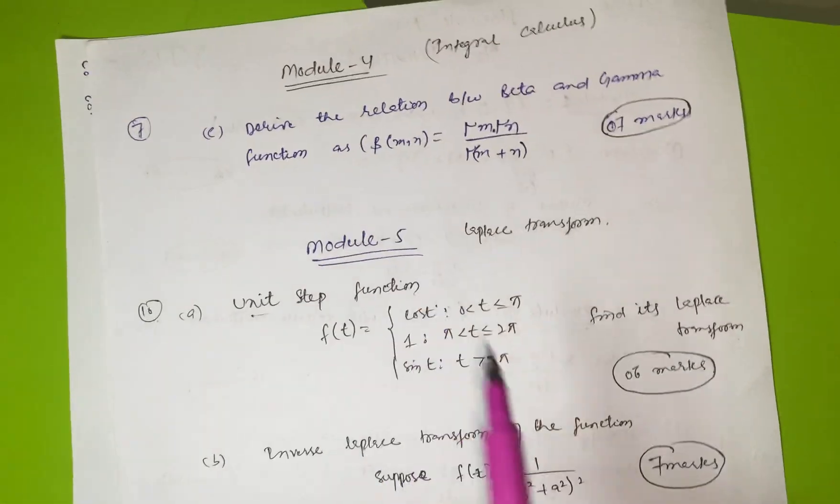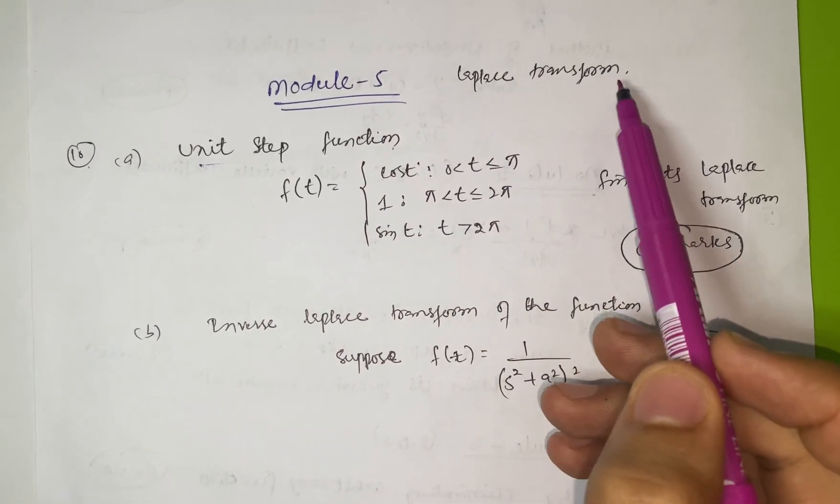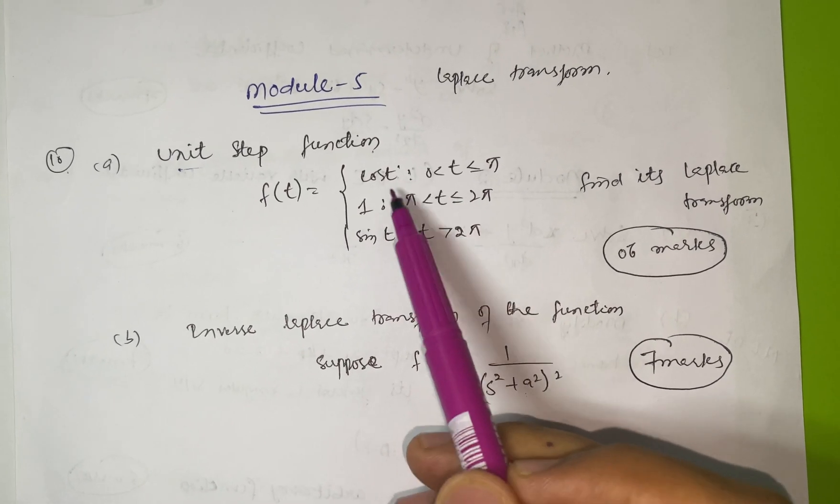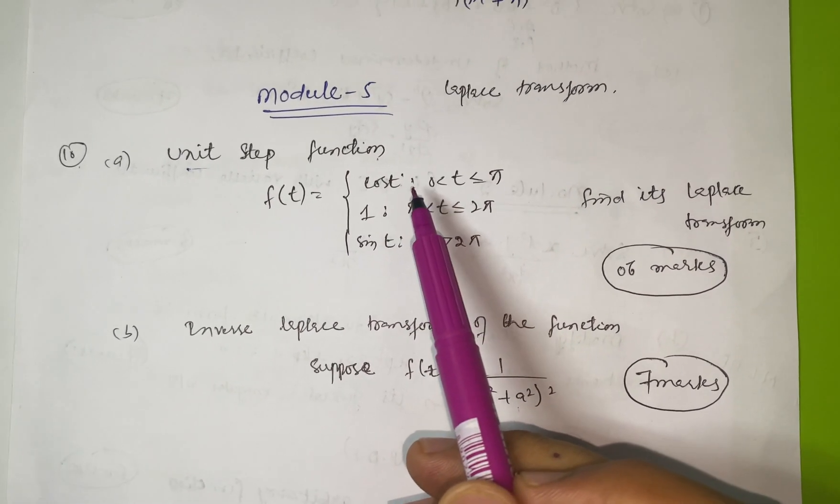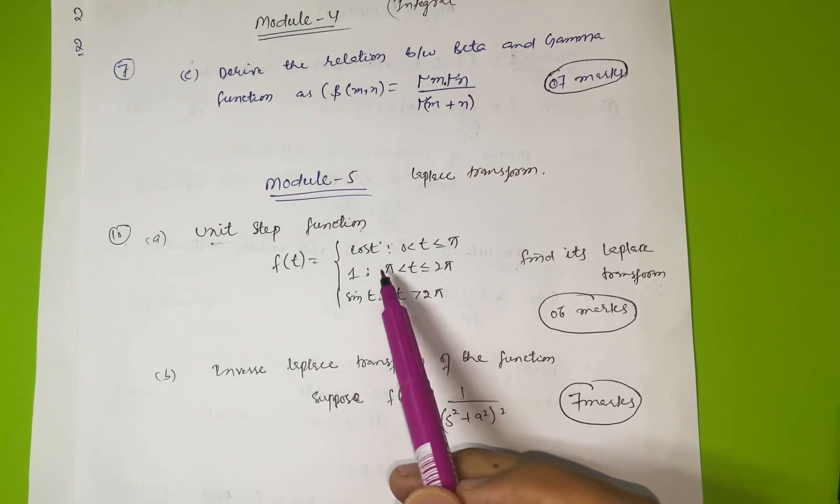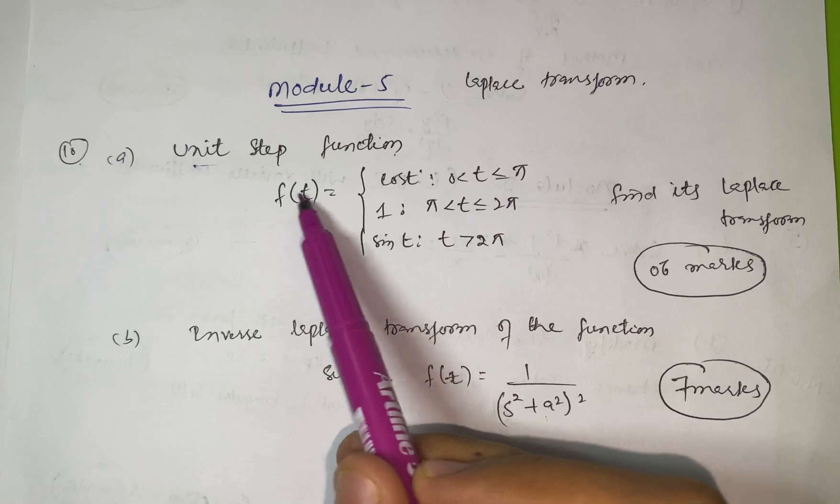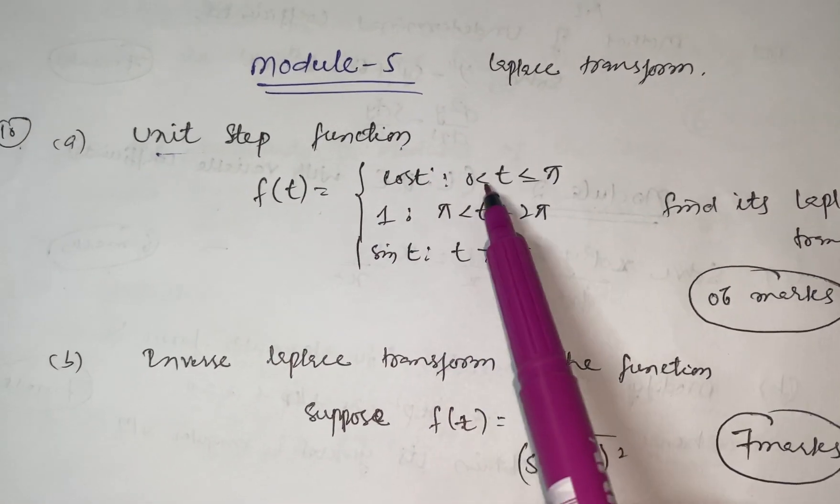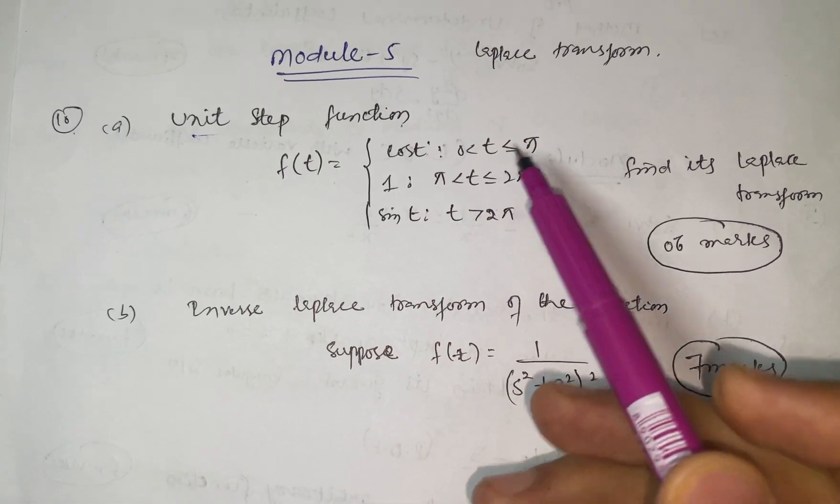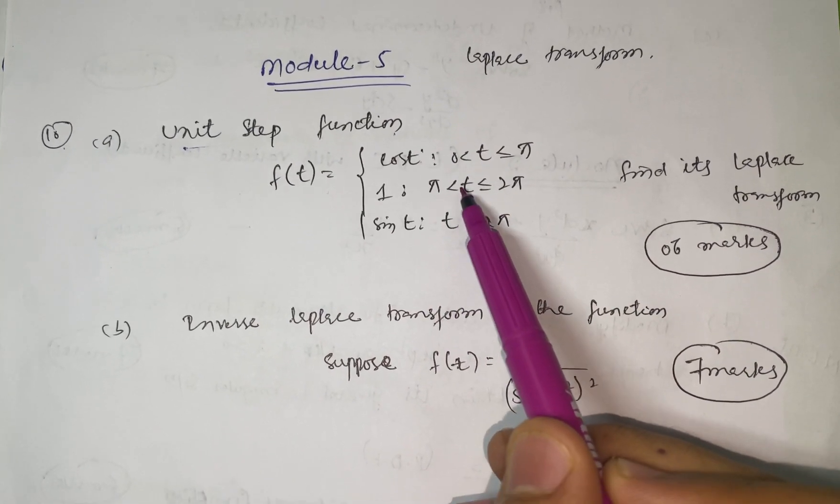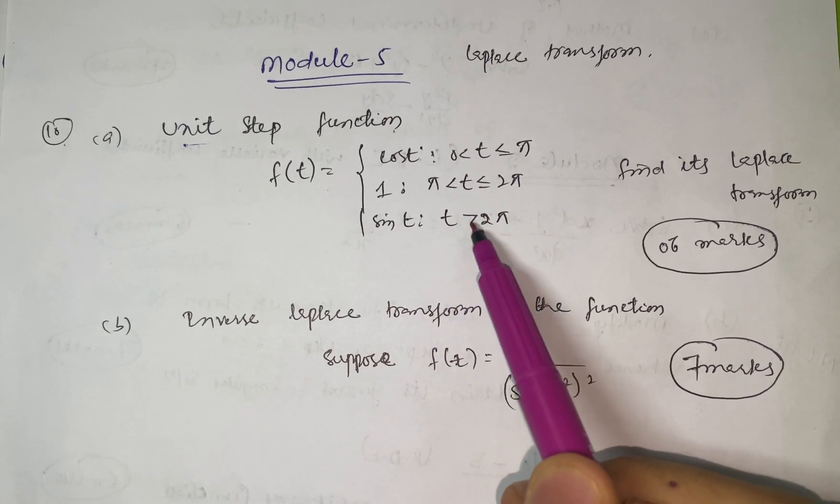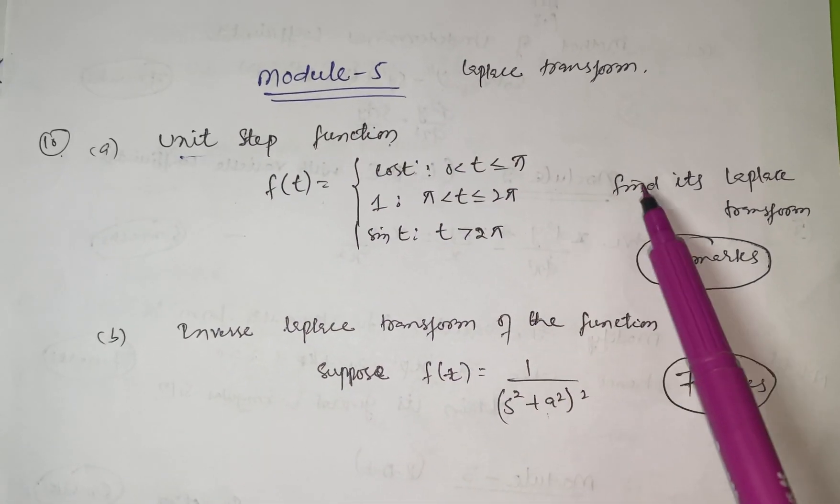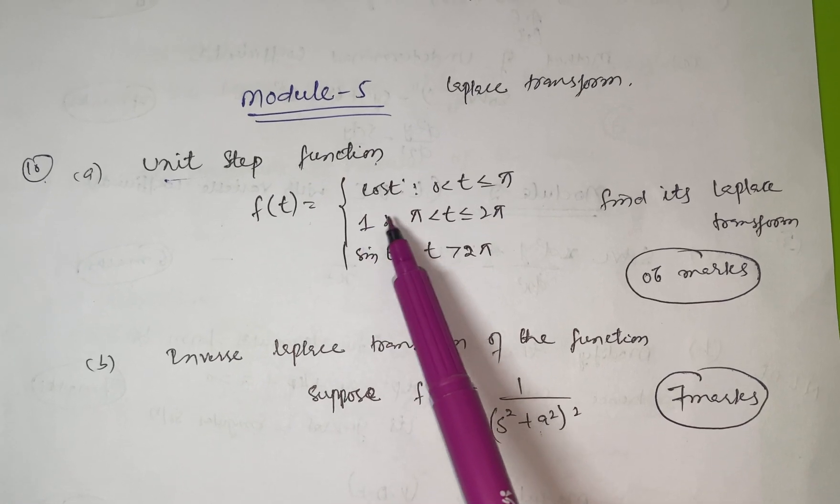Then come to Module 5. There's a Laplace transform, one question is definite but there are five or six functions. You have to focus on them and apply unit step function. The examiner will ask you, suppose f(t) = cos(t) for 0≤t≤π, 1 for π<t≤2π, sin(t) for t>2π. Like that they'll give you the question on unit step function.